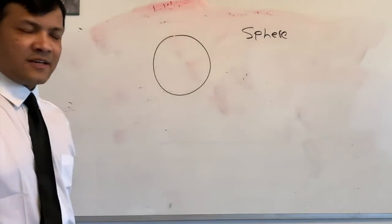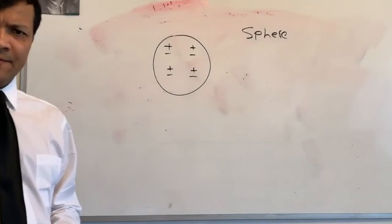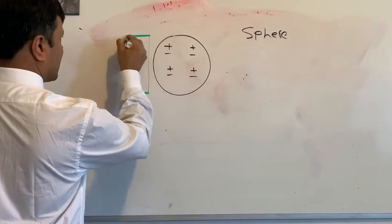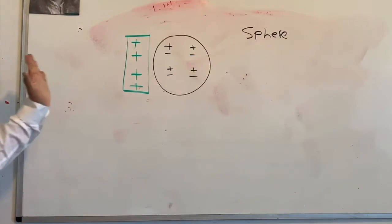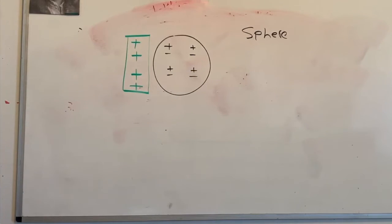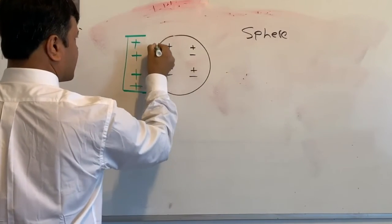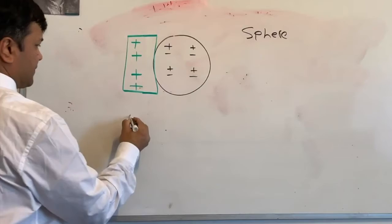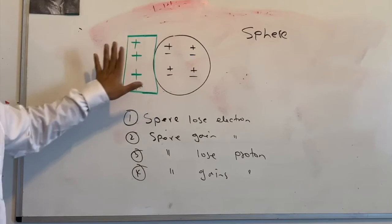If a sphere is neutrally charged and a positively charged rod is brought very close to it, and then the positively charged rod actually touches the sphere, what would happen? The sphere would gain protons - or equivalently, the sphere would lose electrons - becoming positively charged.